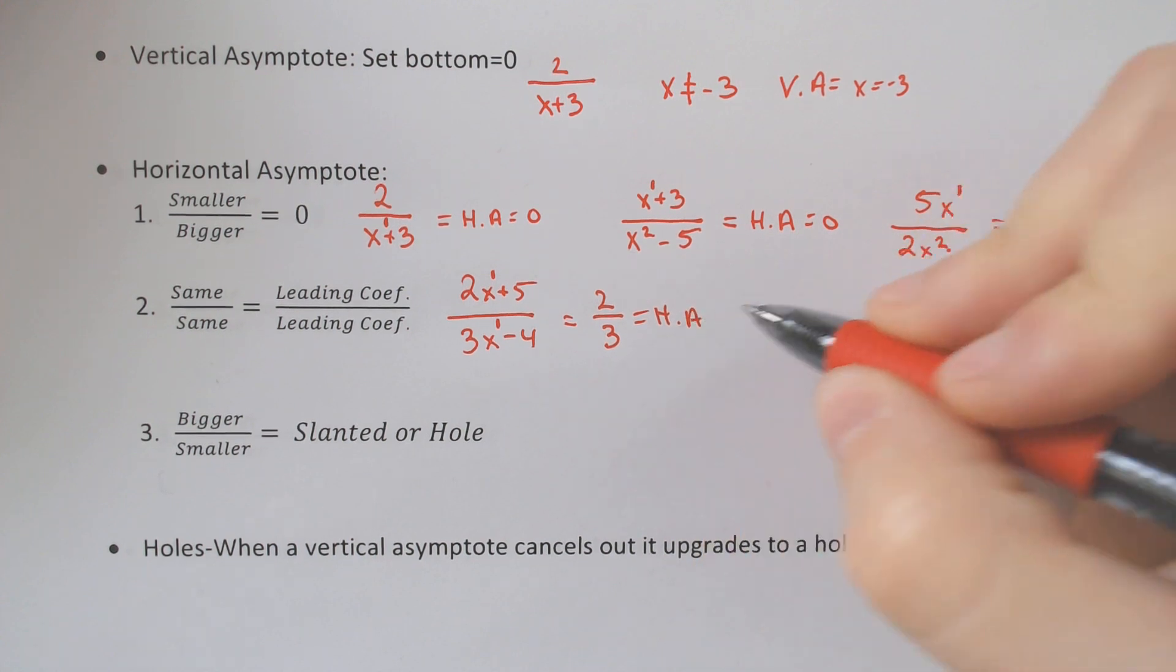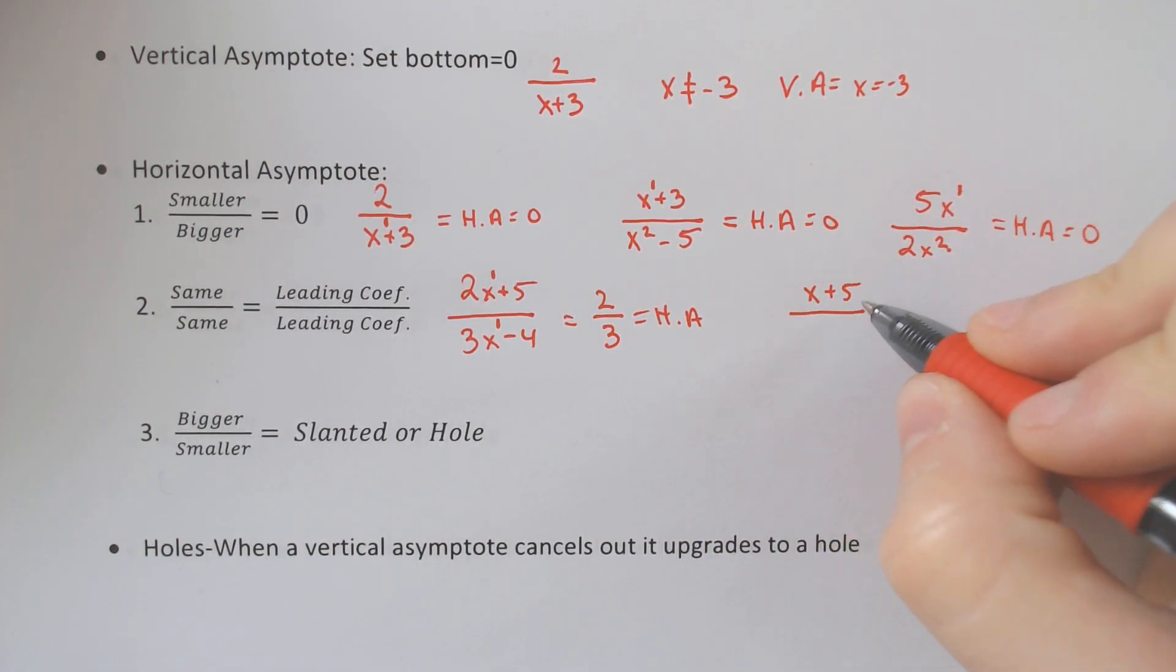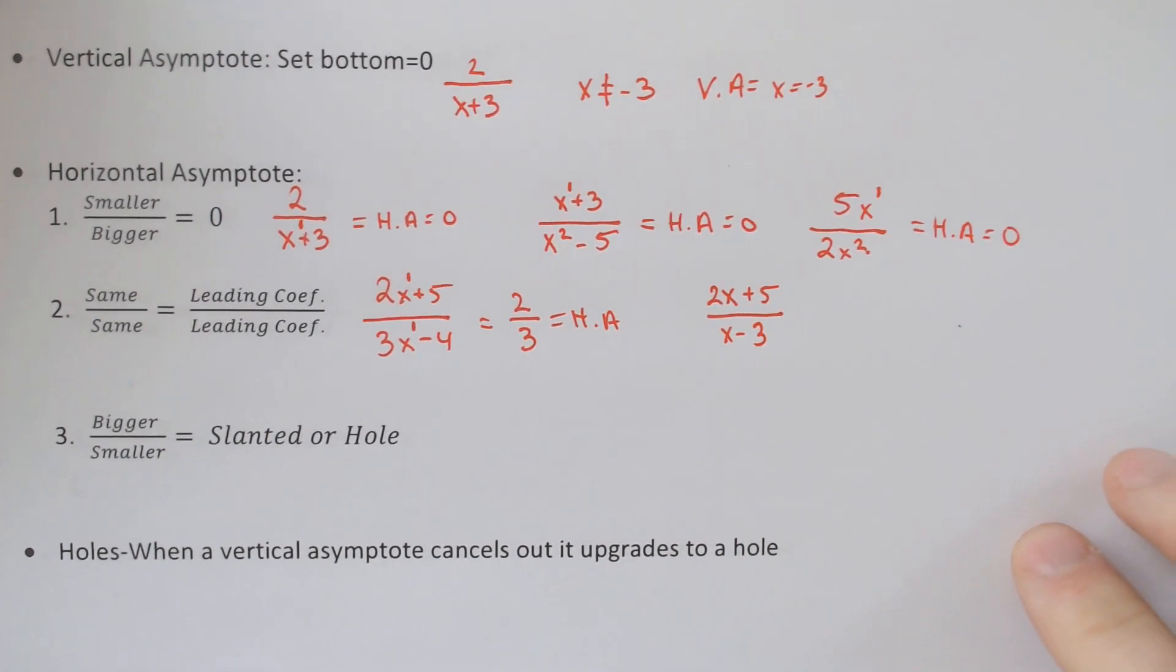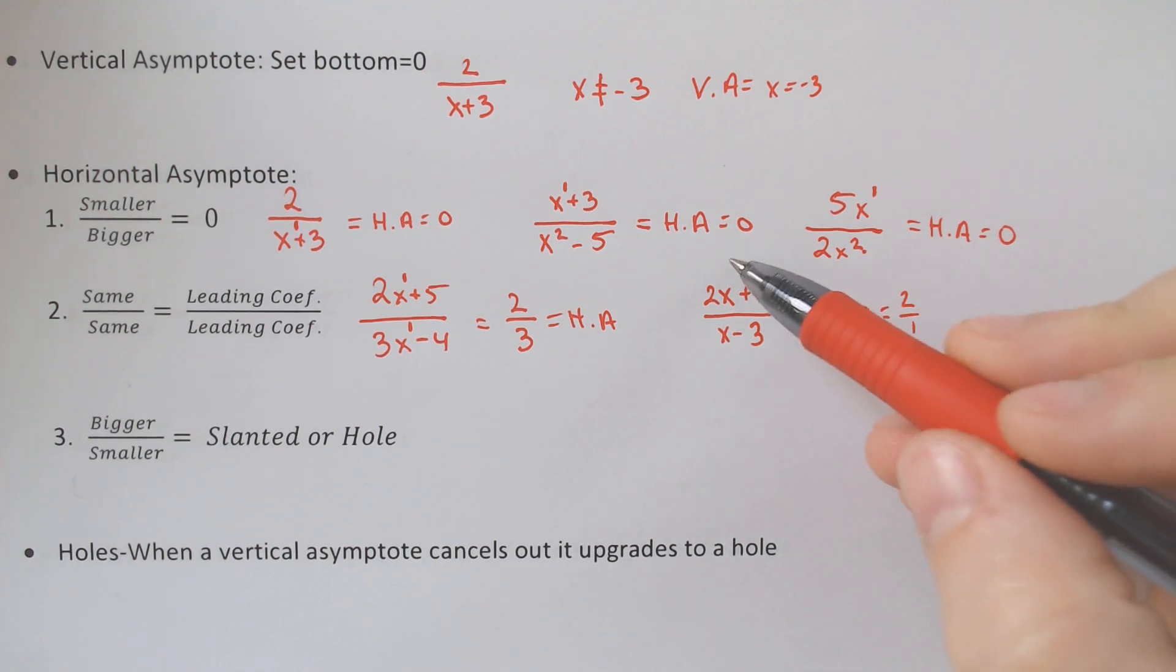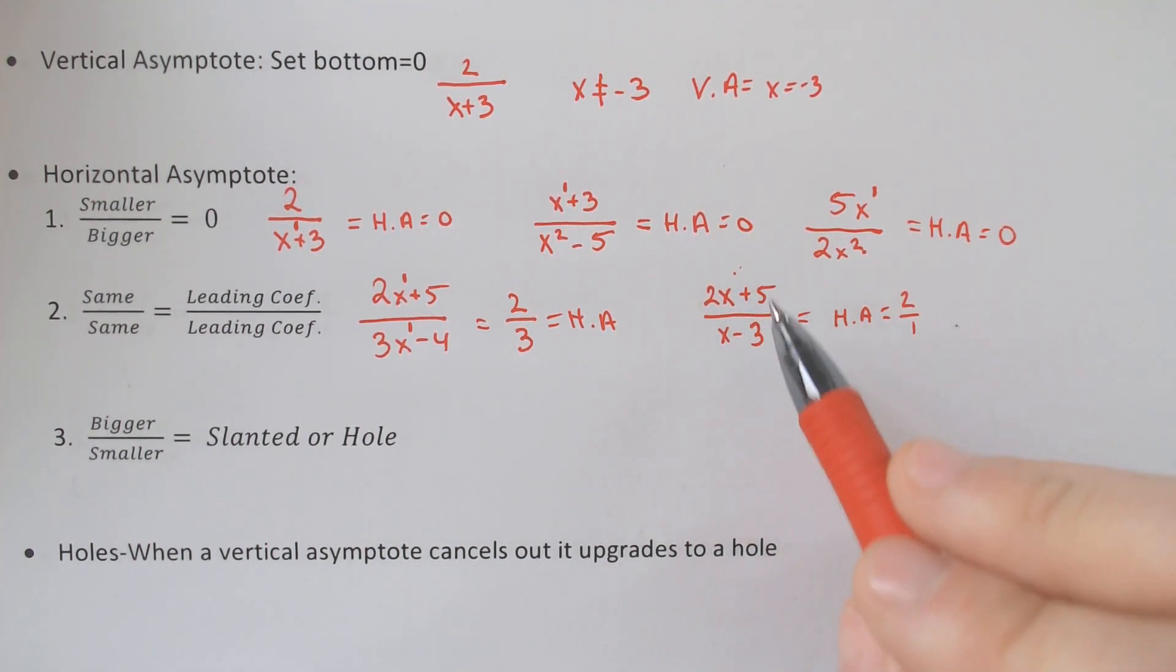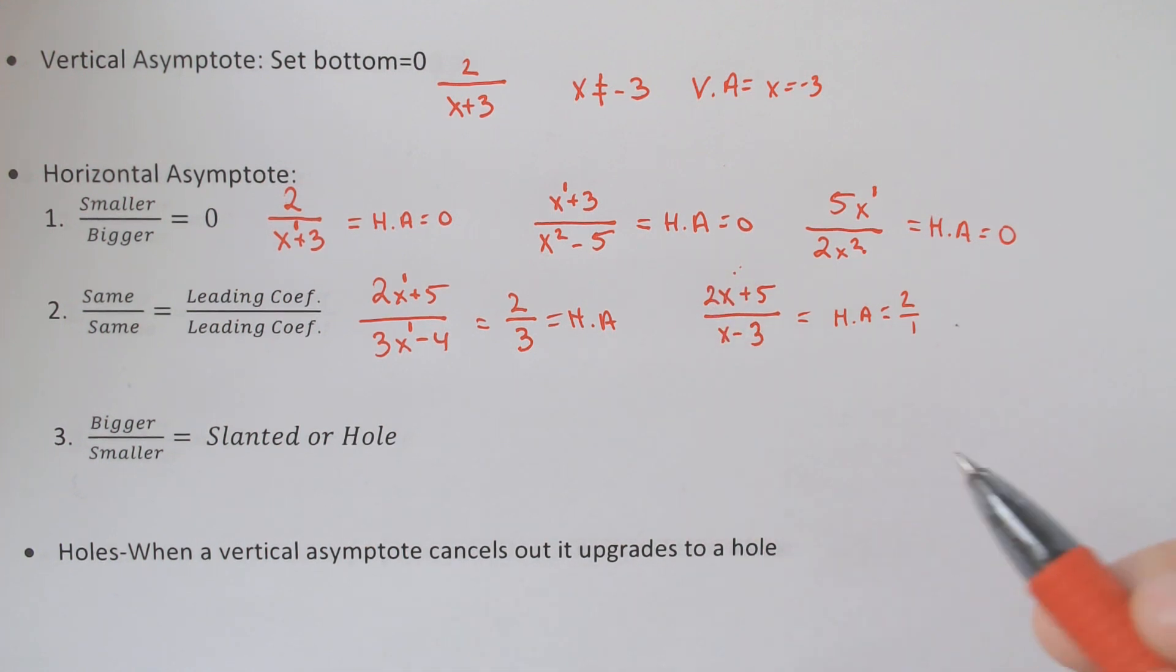If we had an example where it was x plus 5, let's do 2x plus 5, over x minus 3, the horizontal asymptote in this case would be 2 over 1, because it's x to the 1st over x to the 1st. If it were 2x squared and x squared minus 3, it would still be 2 over 1.